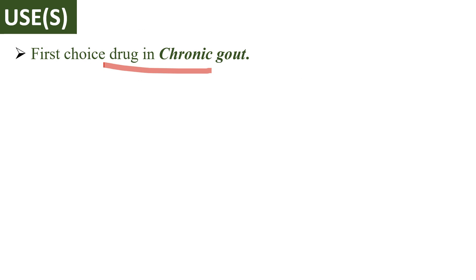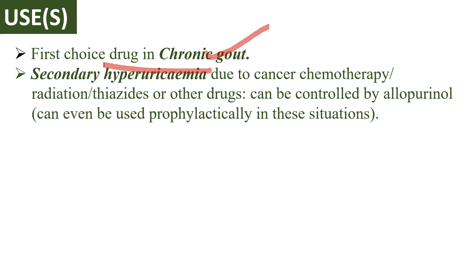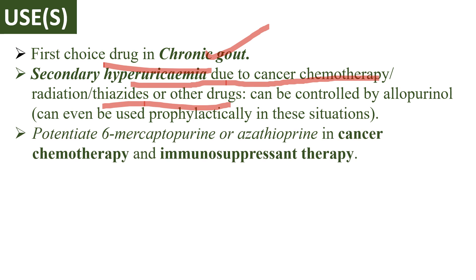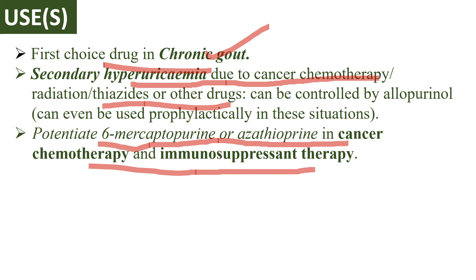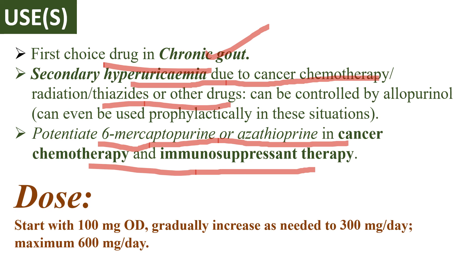Allopurinol is the first choice of drug in chronic gout. It is also used in secondary hyperuricemia which develops due to cancer chemotherapy, radiation, and thiazides. Allopurinol can be used to potentiate 6-mercaptopurine or azathioprine in cancer chemotherapy and immunosuppression therapy. The dose starts at 100 mg once daily, gradually increasing as needed to 300 mg per day, with a maximum dose of 600 mg per day.